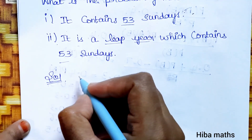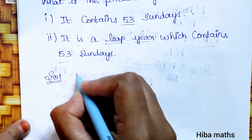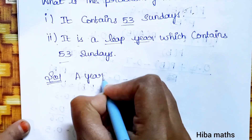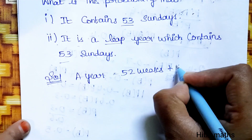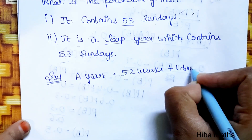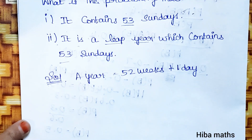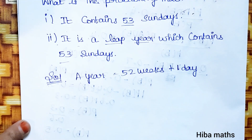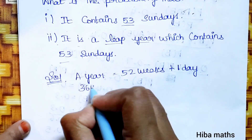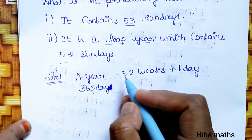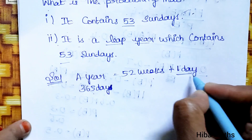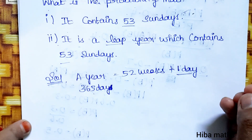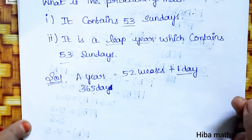In solution, first one is: one year is 52 weeks plus some extra days. A normal, not leap year, has 365 days — that is 52 weeks and one day. That one day will be Monday, Tuesday, Wednesday, Thursday, Friday, Saturday, or Sunday.